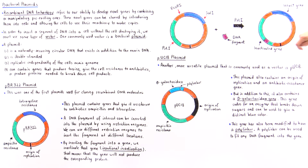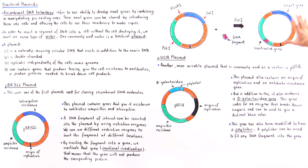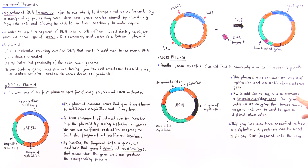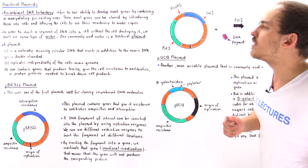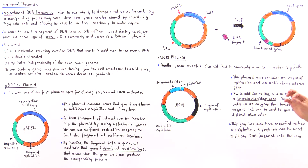So PUC18 contains an origin of replication, an antibiotic resistance gene that can be used as a marker, and the beta-galactosidase gene. This gene codes for an enzyme that breaks down sugars and can produce a distinct blue color when that enzyme reacts with a special analog molecule, as we'll discuss in a future lecture.